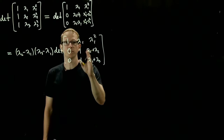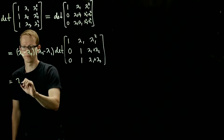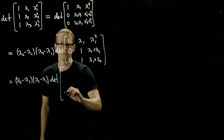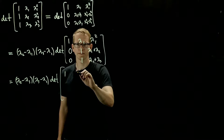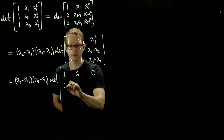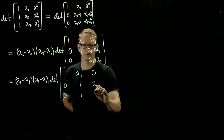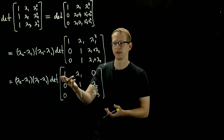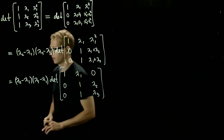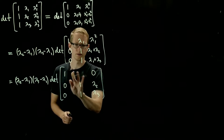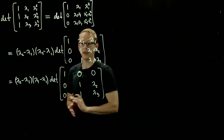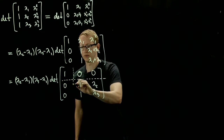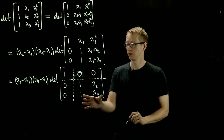And you also don't change the determinant because you're taking one column and adding it to another. So this is also equal to the determinant of what's left over after you do that subtraction: 0, 0, 1; 0, 1, and then just lambda_2 and lambda_3 left over. You can even do something simpler now — you have a 1 here, you can multiply this by lambda_1 to get rid of that. We can just erase this and put a 0 here. What's left over after you perform these operations is another Vandermonde matrix in the bottom right corner.